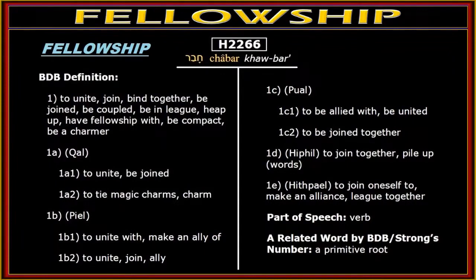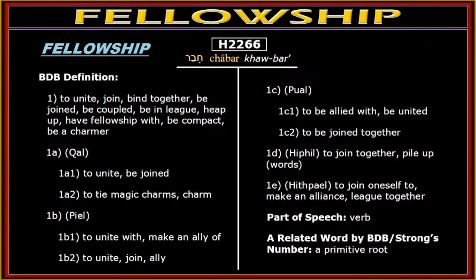Now let's look at the verb stem definitions. I'm not going to go deeply into the verb stems ourselves — we'll probably do that later. I'll probably have Sister Shanti back, and hopefully Mauret David Royal will be able to help us do the Hebrew with the verb stems. But 1A gives us the qal verb stem, and it says to unite, be joined — to tie. 1A2 says to tie magic charms. And the Piel stem under 1B says to unite with — make an ally of.